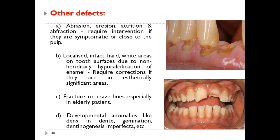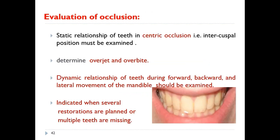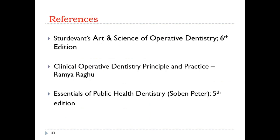Evaluation of the periodontium is critical to restorative treatment and long-term prognosis. Periodontal health should be assessed before any endodontic treatment by evaluating oral hygiene, supragingival and subgingival calculus, health and position of gingival tissues, bleeding on probing, presence of pockets, and mobility. Occlusion should also be evaluated — static relationship of teeth in centric occlusion, overjet, and overbite — especially when several restorations are planned or multiple teeth are missing.